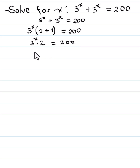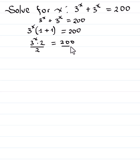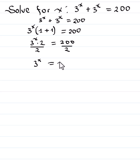So we have 3 raised to the power x times 1 plus 1, which is 2, equals 200. Then we divide both sides by 2. This will give us 3 raised to the power x is equal to 100.